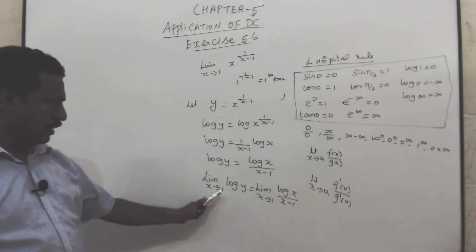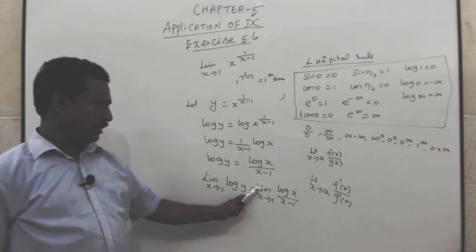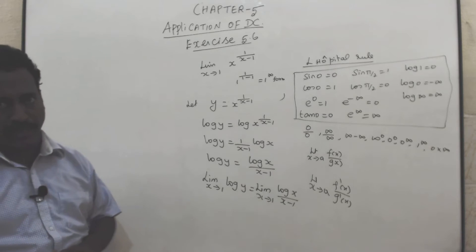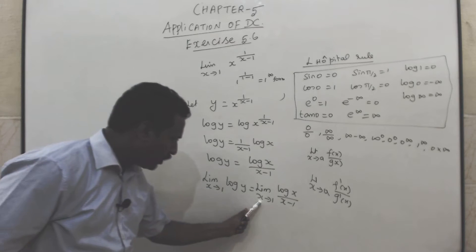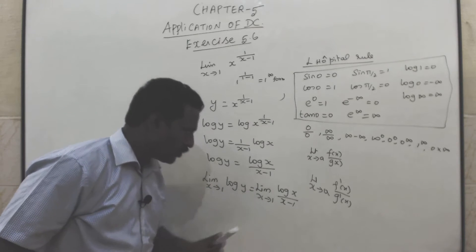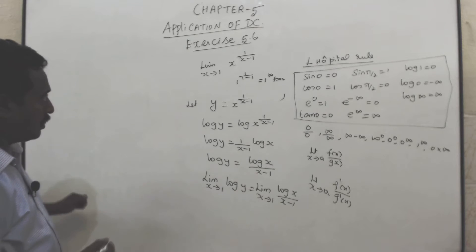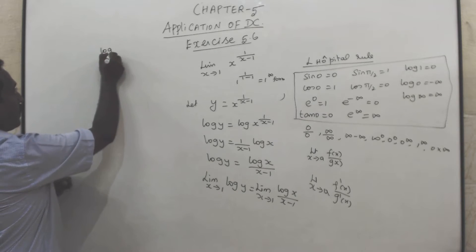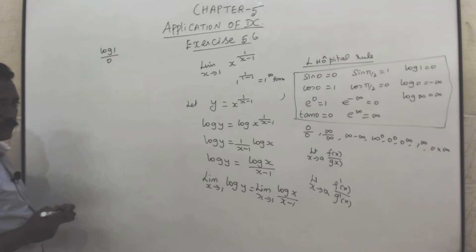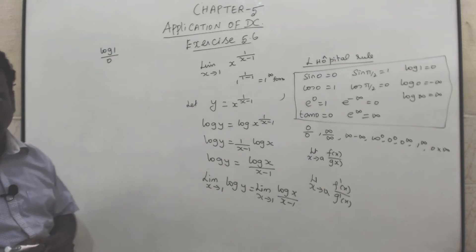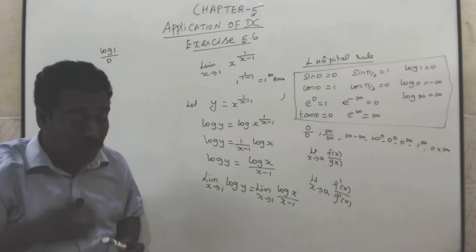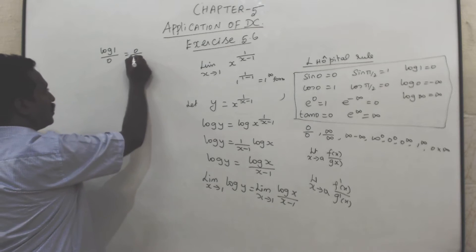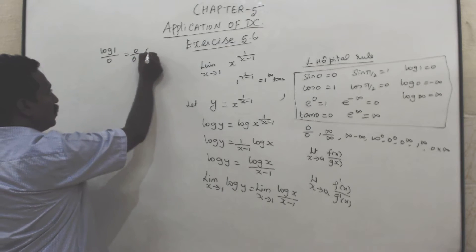Taking limit x tends to 1, log y equals limit x tends to 1 of log x divided by x minus 1. When we put x equal to 1, that is log 1 by 1 minus 1, which is 0 by 0. Log 1 is 0, so we get the 0 by 0 form.